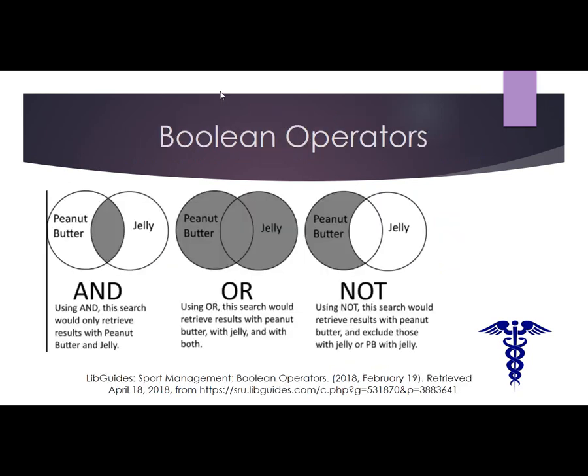Before we dive right into searching the databases, let's take just a few minutes and examine some searching techniques. Boolean operators are useful when wanting to include, include and supplement, or exclude information. Looking at this example, we can see that AND will return all the results that include both peanut butter and jelly.